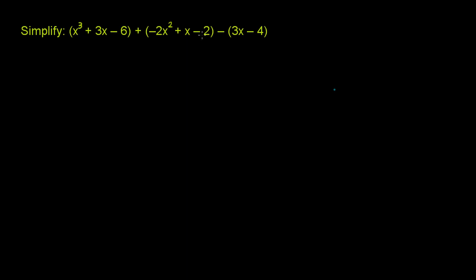We're asked to simplify this huge long expression here. x to the third plus 3x minus 6, that's in parentheses, plus negative 2x squared plus x minus 2, and then minus the quantity 3x minus 4.